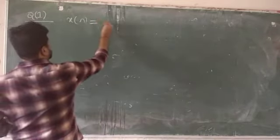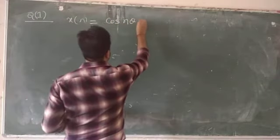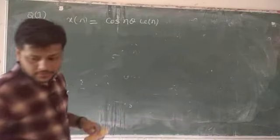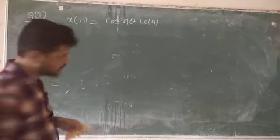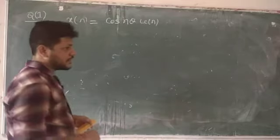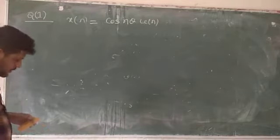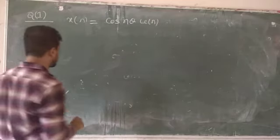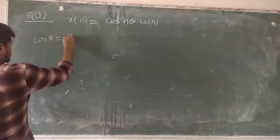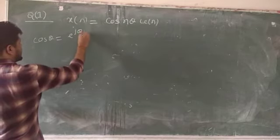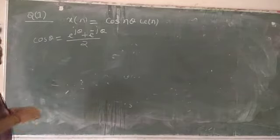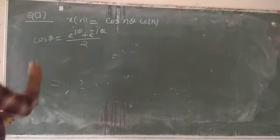The next example: xn = cos(nθ)·u(n). Find the Z-transform of cos(nθ)·u(n). The moment you see cos(nθ), use the basics of complex numbers — specifically Euler's formula.